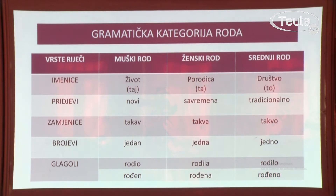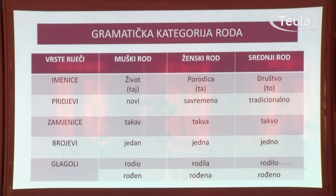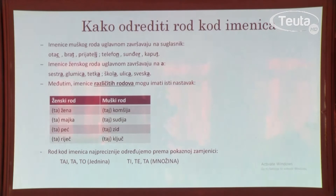Brojevi 3 i 4 sve se rjeđe primjenjuju u savremenom jeziku. Kad su glagoli u pitanju, gramatičku kategoriju roda kod glagola razlikuje glagolski pridjev radni – rodio, rodila, rodilo – odnosno glagolski pridjev trpni – rođen, rođena, rođeno.